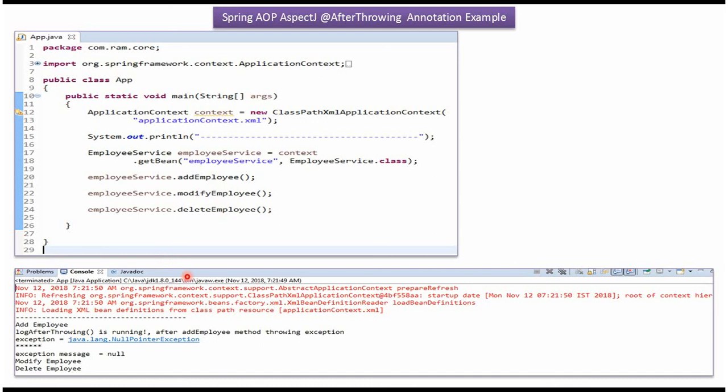Here you can see the output. And here you can see logAfterThrowing method is executed because AddEmployee method throws a null pointer exception.